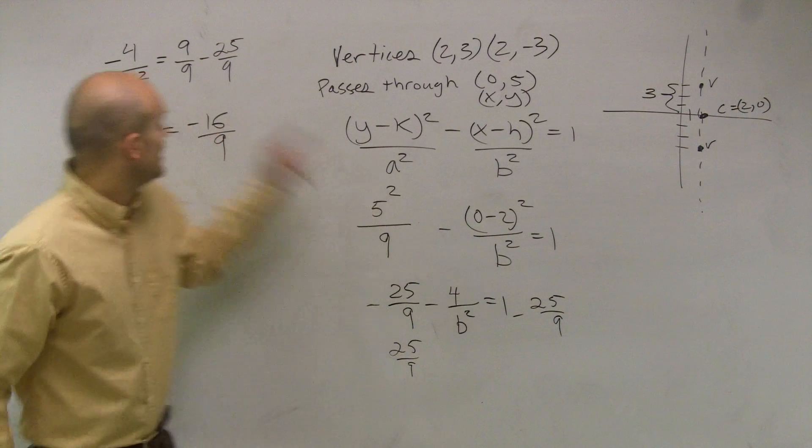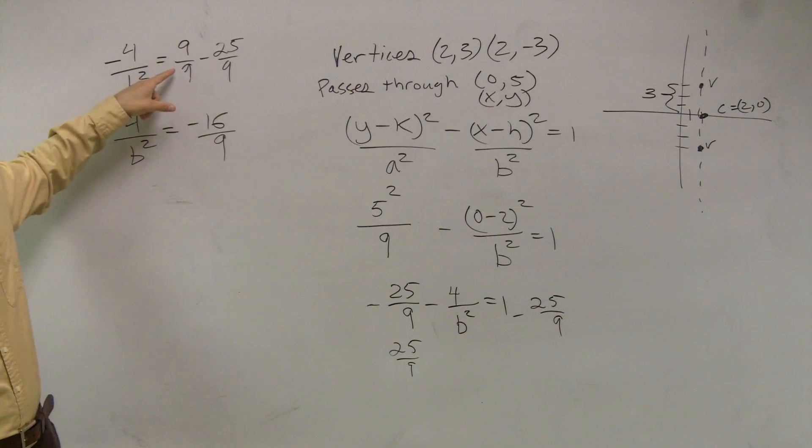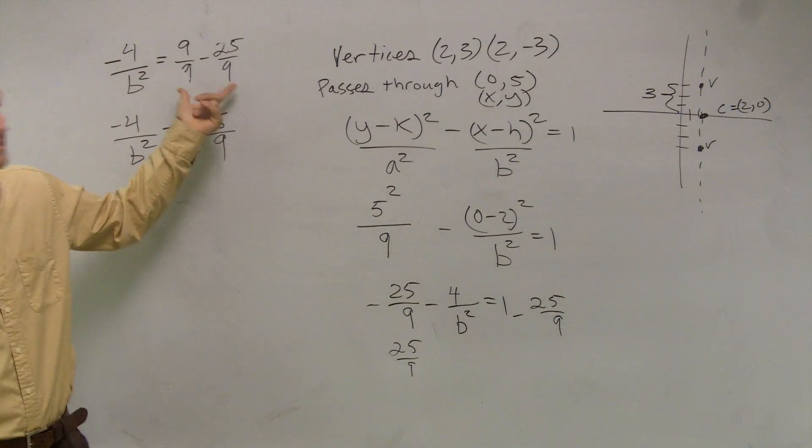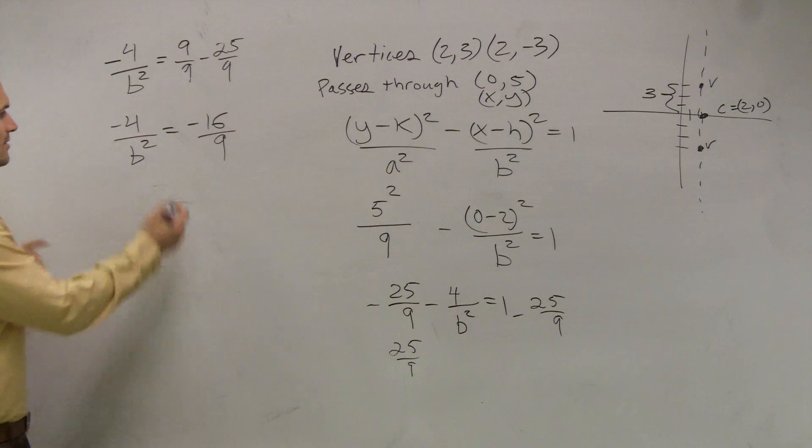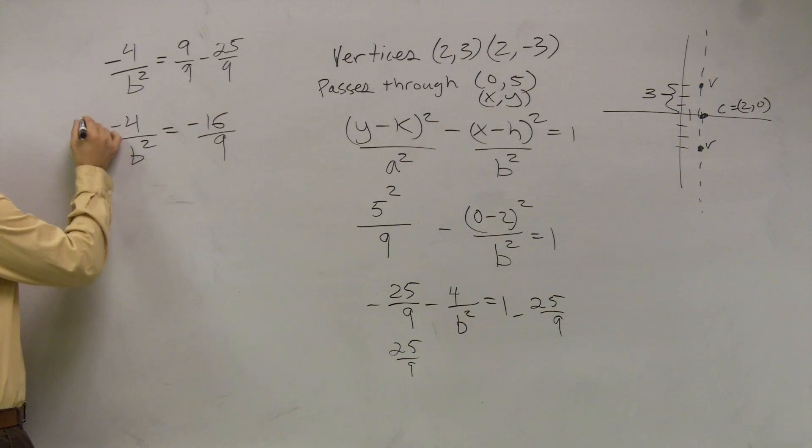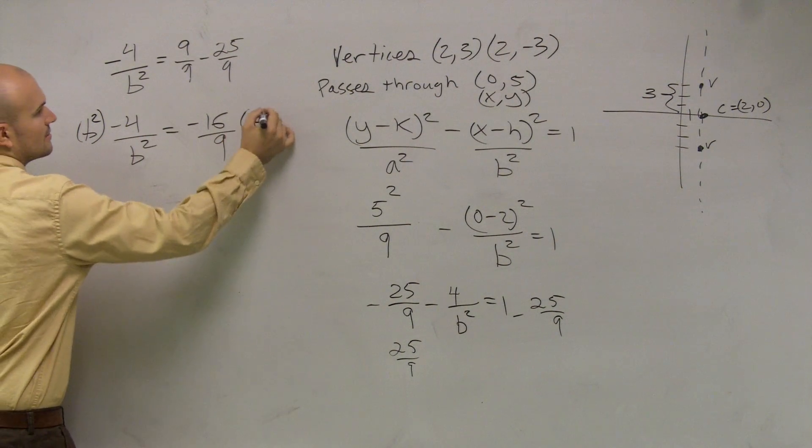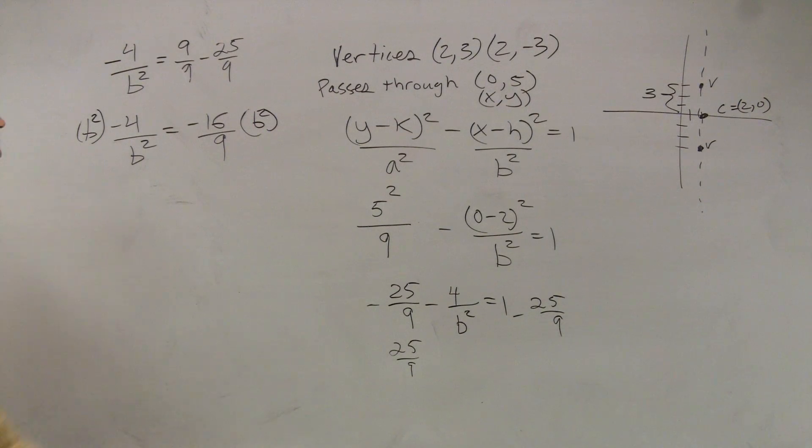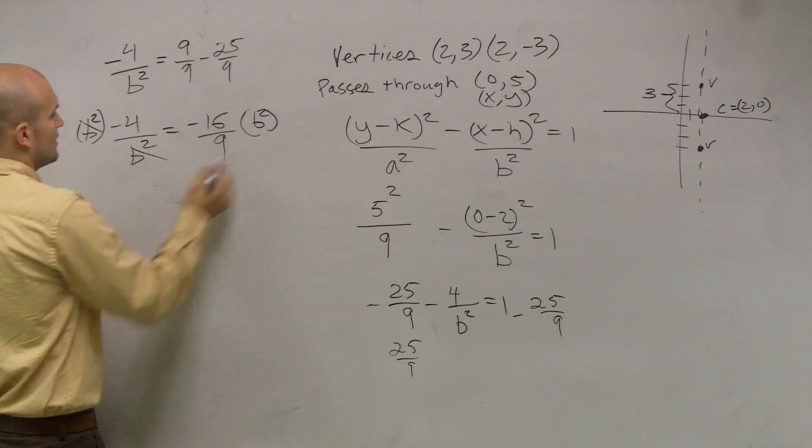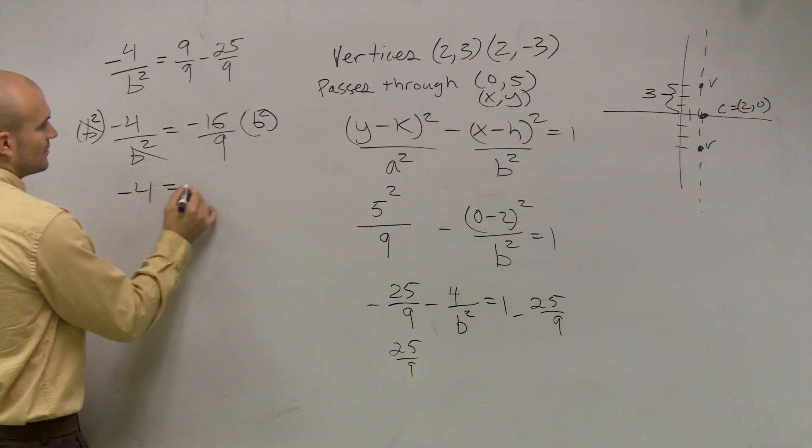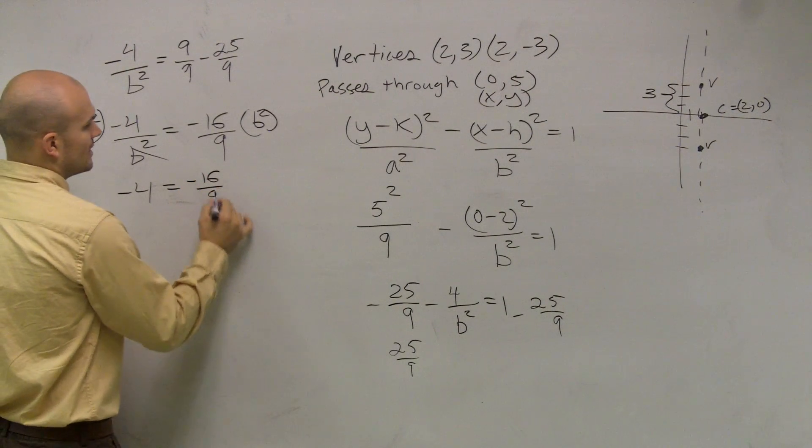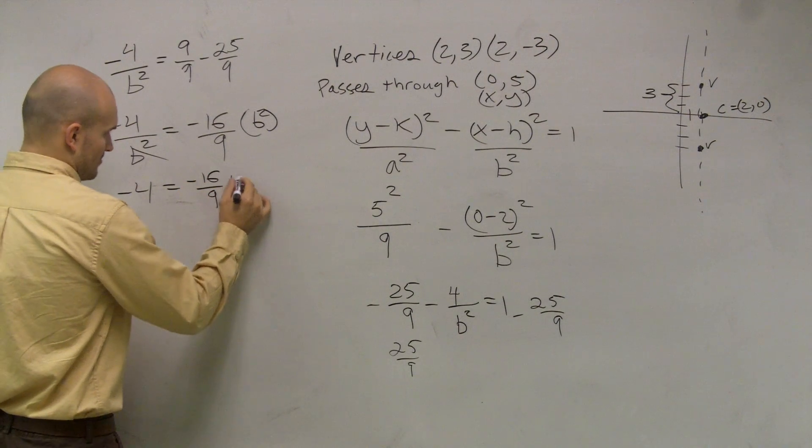I just rewrote the 1 as 9 over 9, because 9 over 9 is still 1. I just rewrote it so they have the same terms. Now, I need to get the b squared off the bottom. So I multiply b squared on both sides. Right? So therefore, I have negative 4 equals negative 16 over 9 times b squared.